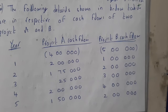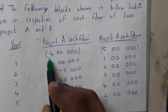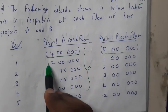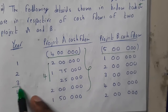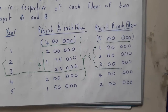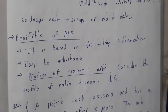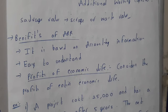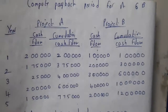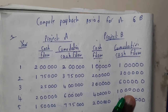Now a slightly more complex problem involving two projects. Project A has a cost of four lakhs and Project B has a cost of five lakhs. We need to calculate the payback period for both. Using the same cumulative cash inflow approach: for Project A, the cumulative cash inflow reaches exactly four lakhs at Year 3, so the payback period is three years.